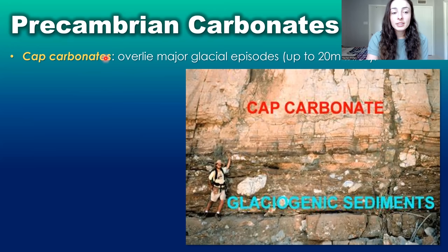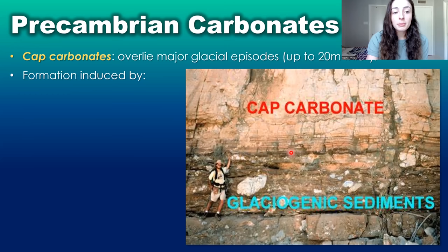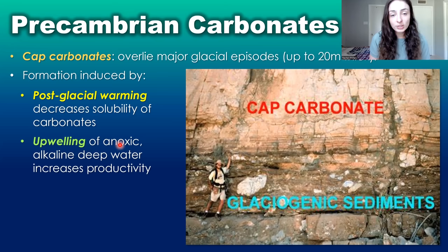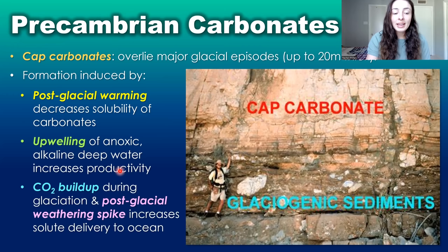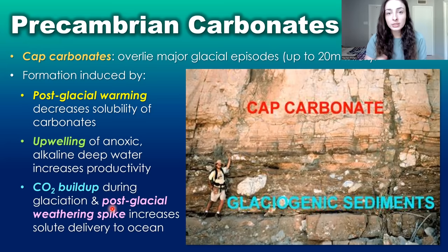The next type of Precambrian carbonate to discuss is cap carbonates, which overlie major glacial episodes and can be up to 20 meters thick. These form by postglacial warming that decreases carbonate solubility, upwelling of anoxic alkaline deep water which increased primary productivity, and CO2 buildup during glaciation followed by a postglacial weathering spike — all of which increased calcium and carbonate delivery to the oceans and greatly increased carbonate deposition directly after the glacial period.